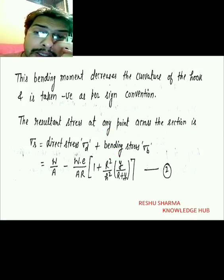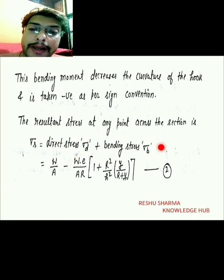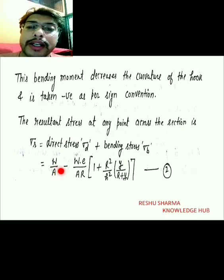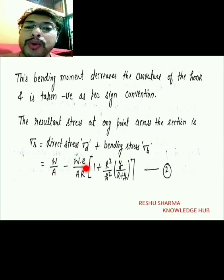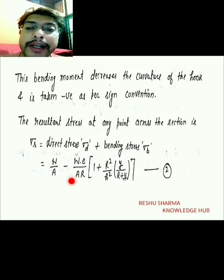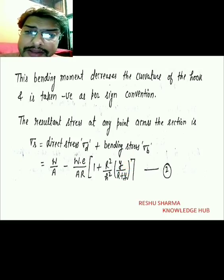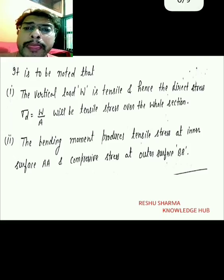The resultant stress at any point across the section is given by: sigma_r equals direct stress sigma_d plus bending stress sigma_m. The direct stress is W divided by A, and the bending stress is W·e divided by [A·r·(1 + r²/h²)·(y/(r + y))]. This bending stress was derived using the Winkler-Bach theory.